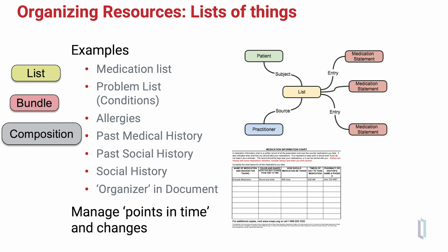A past medical history, which we think of as a list of past conditions or procedures in a patient's history, a past social history, or current social history, that both represent different lists. These list resources would be used as a way of organizing data within a document or for exchange.